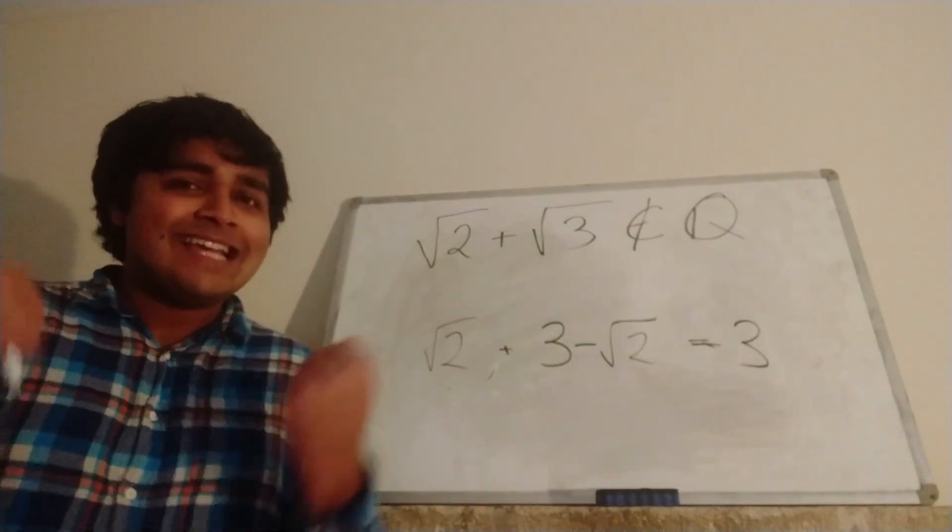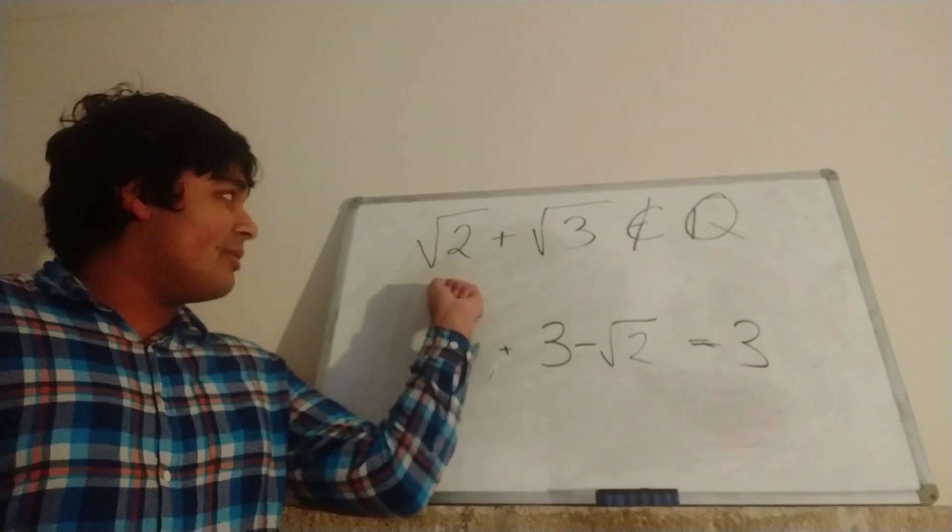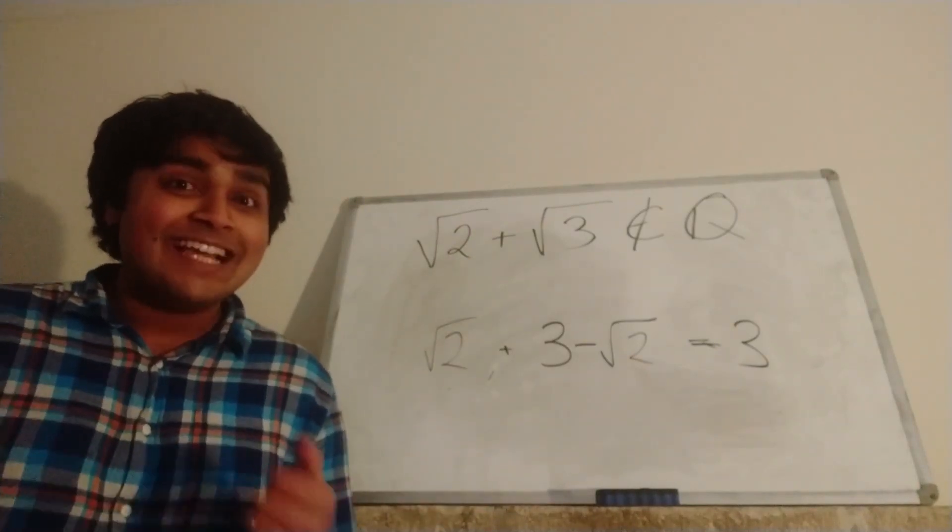So an irrational plus an irrational isn't necessarily irrational, but today I want to prove that in this case √2 + √3 is irrational. Let's get stuck in.